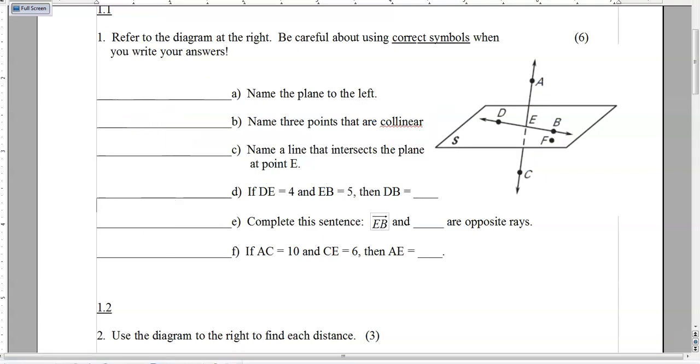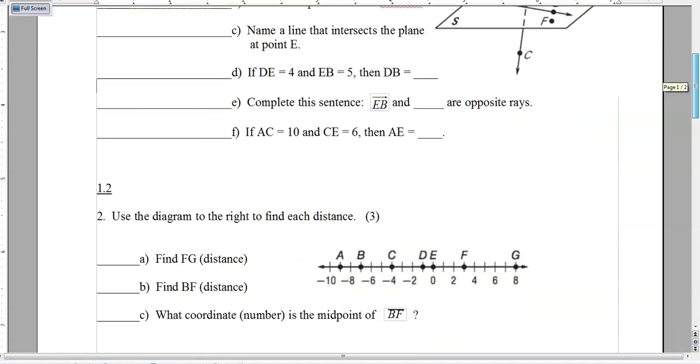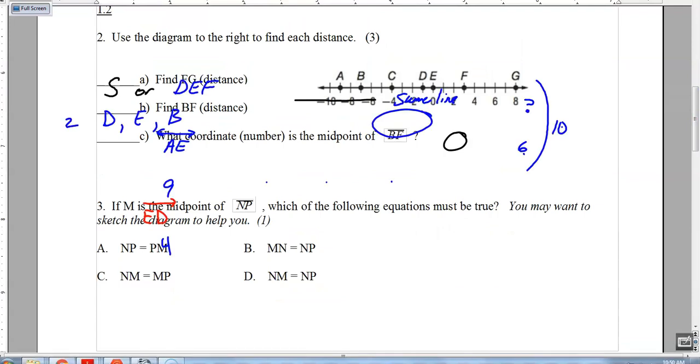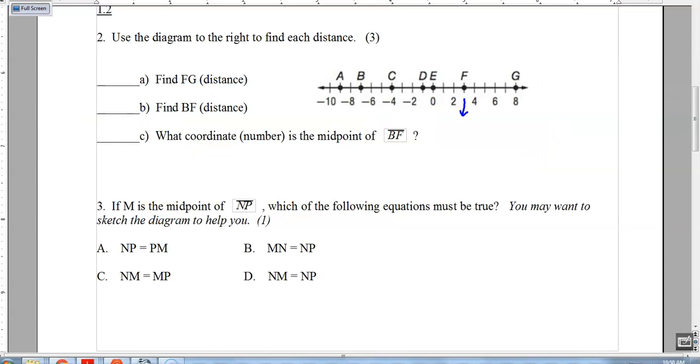Alright, so let's move down now into section 1.2. We have a number line here for this one, and we need to find some distance between some points, maybe find a midpoint. So what is the distance from F to G? Well, F is at coordinate 3, G is at coordinate 8, and the distance between those two, you can subtract and do 8 minus 3 is 5. You could also count spaces. 1, 2, 3, 4, 5. Do not count tick marks, count spaces.